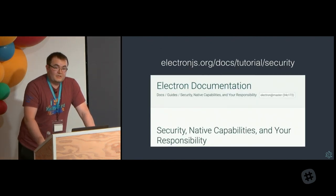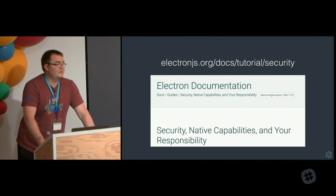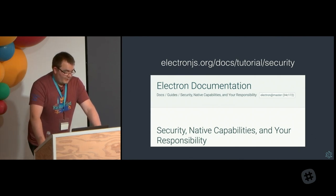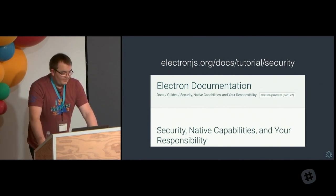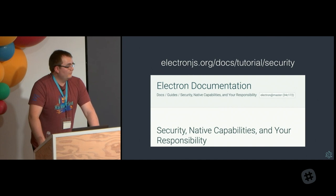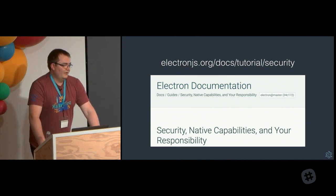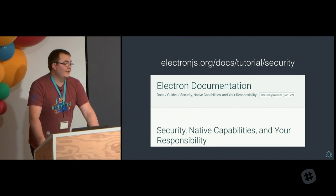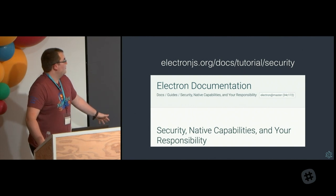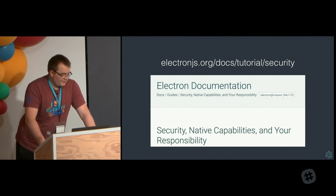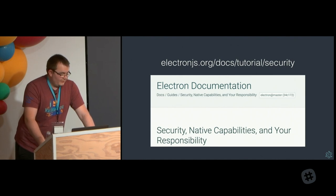However, as app developers, there's a bunch of stuff that you can be doing that's security-related. There's a great guide on our website called 'Security, Native Capabilities and Your Responsibility.' Everyone building an app should read this — there are about 12 bullet points explaining common attack vectors, common issues like misconfiguring your browser window and leaving Node open, and options you should enable to lock down your app, like sandbox and context isolation. We are making changes at the moment to make Electron more secure by default, but they're currently opt-in, and you all should be looking to turn them on.